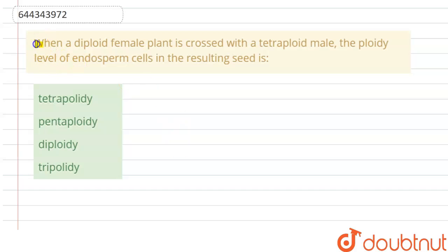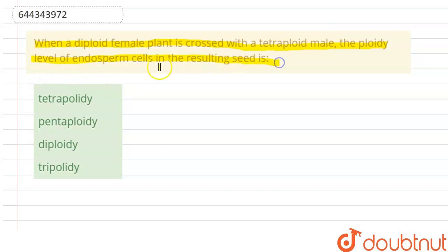The question here is: when a diploid female plant is crossed with a tetraploid male, the ploidy level of the endosperm cells in the resulting seed is — tetraploidy, pentaploidy, diploidy, or triploidy?